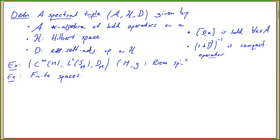Another class of examples is finite spaces. I would like to have some kind of geometry on them, so let me start with just a finite space — some N points — and to capture a geometric structure on it, it's like giving a metric, which doesn't need to be the discrete metric. The idea is to try to capture this with just a triple, and then we can also do the reconstruction in more detail.